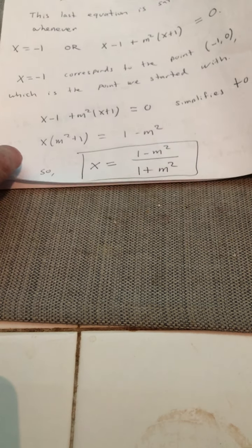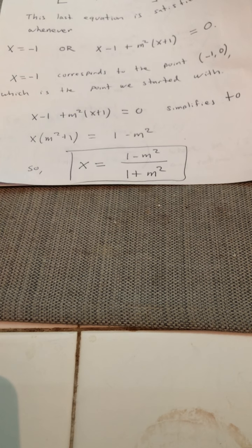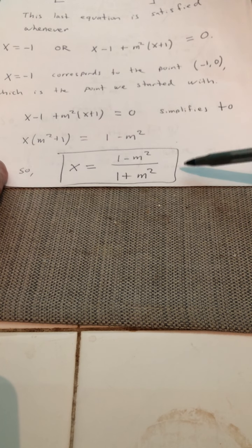Remember what we're doing. We're trying to find rational points on the circle. So we're almost done. We need to now get the y coordinate.